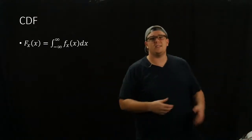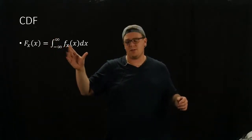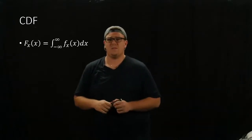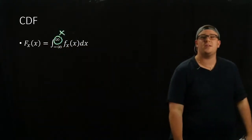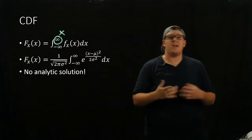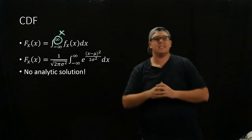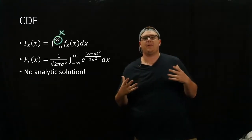Once we have looked at the PDF, we want to look at the CDF — the cumulative distribution function — which basically says: what's the probability of getting a value for this random variable less than a certain number? The CDF is the integral from negative infinity up to some value x of the PDF. If we plug in what f_x(x) is, we find that we have no analytic solution — there's no way to actually take this integral, because e to the x² is not integrable for any value of x.